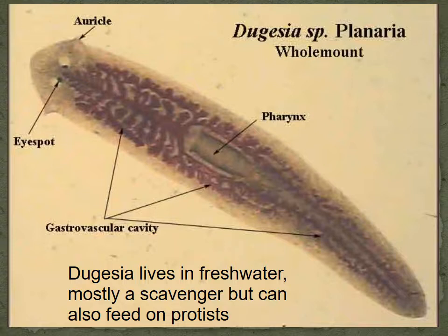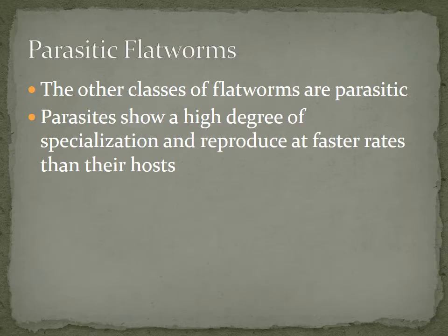Instead of showing a diagram, this is what it looks like under the microscope. From this microscopic image, the eye spots are very visible, and you can see the digestive cells in the gastrovascular cavity lining it and the pharynx. This particular slide is Dugesia, a fresh water flatworm.